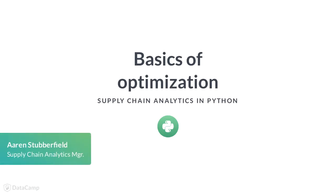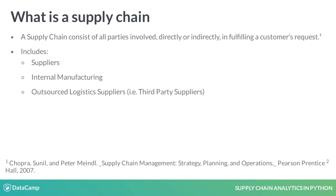Welcome to this course on supply chain analytics. In this first lesson, we will talk about the basics of optimization. This course will focus on supply chain optimization, so let us briefly define what a supply chain is. A supply chain consists of all the parties involved directly or indirectly in fulfilling a customer's request. That includes external suppliers, manufacturing, production planning, and more.